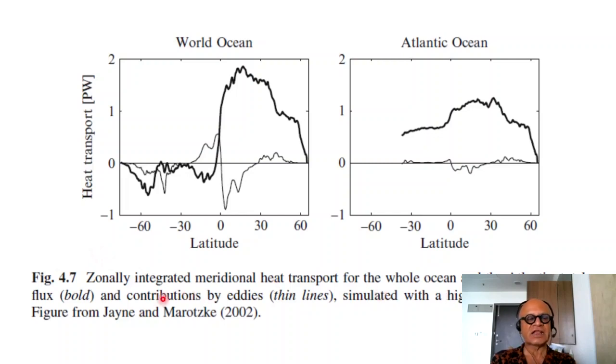The parameterizations again are done similarly, as we will see in a minute. Zonally integrated meridional heat transfer for all ocean and the Atlantic, so that's the bold line and contributions by eddies, the thin line. So you can see that the equatorial region has large eddy contributions converging into the ocean region because this is negative, so southward, this is positive, so northward.